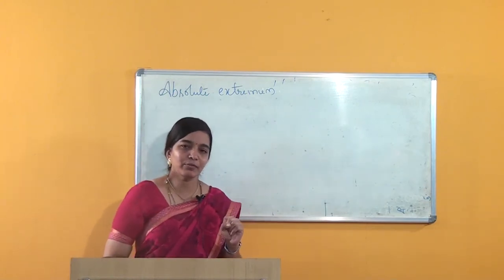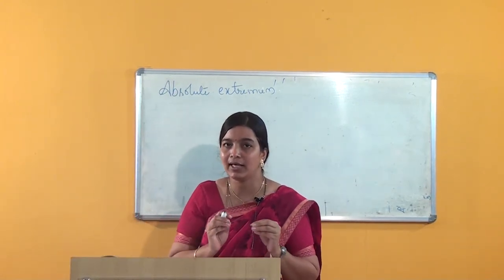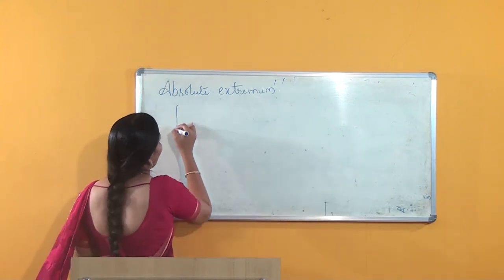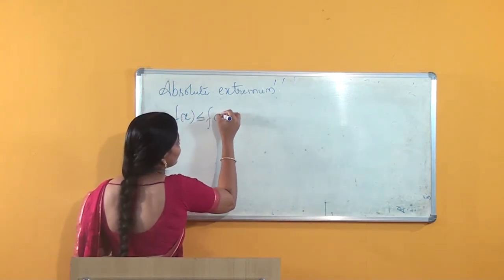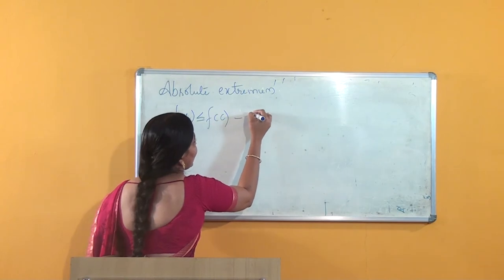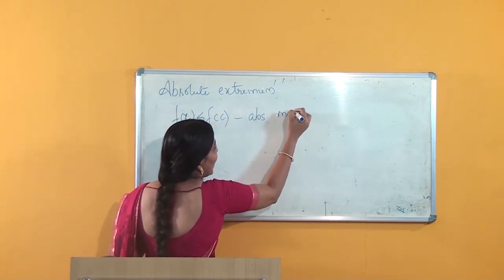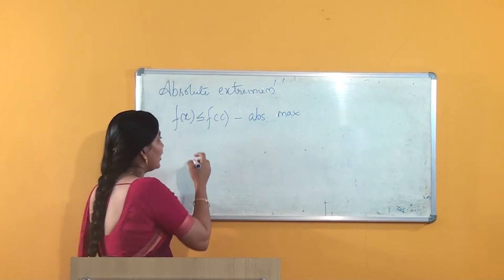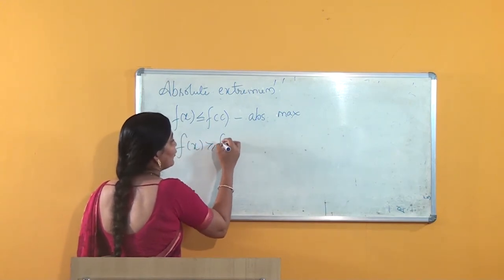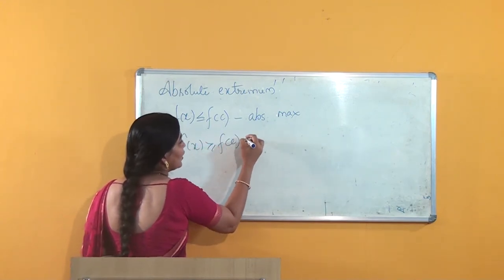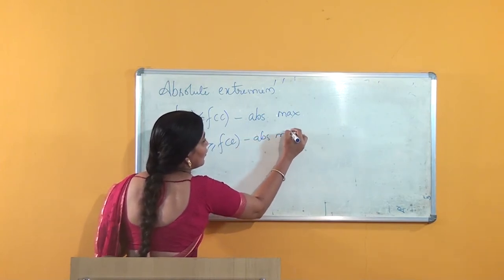Absolute maximum value is: if I get a point C in the interval such that f(x) is less than or equal to f(C), then I can say that this is the absolute maximum value. If I get f(x) greater than or equal to f(C), then this is the absolute minimum value.